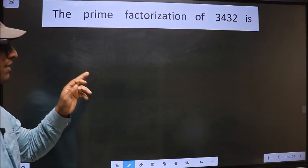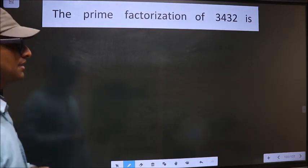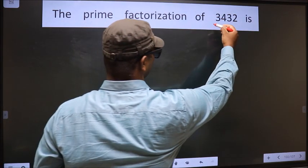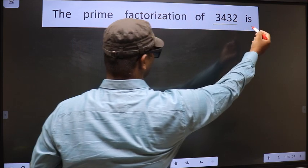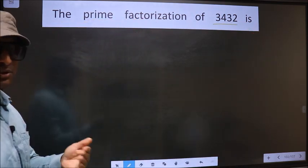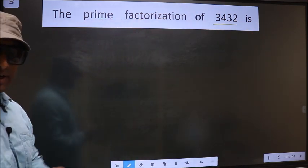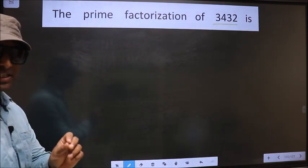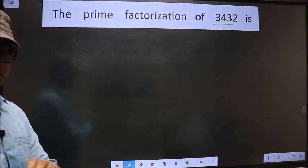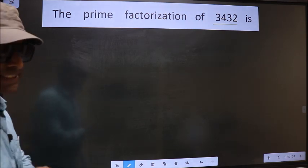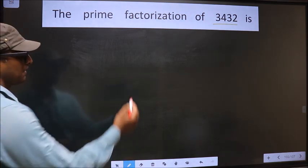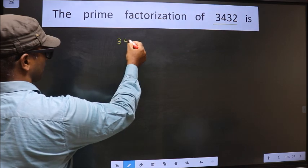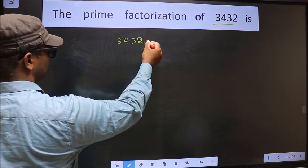The prime factorization of 3432 is — to do prime factorization, first we should frame it in this way. That is 3432.